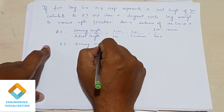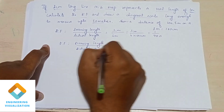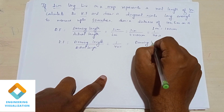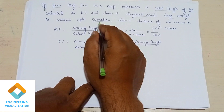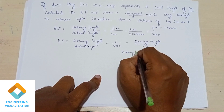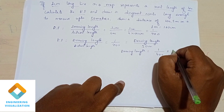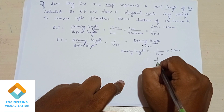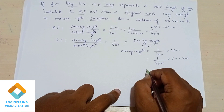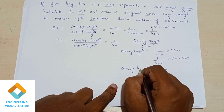Using this representative factor we can find out the drawing length. The actual length given is 50 meters. So drawing length equals 1/400 into 50 meters, which is 1/400 into 50 into 100 centimeters. Simplifying, the drawing length is 12.5 centimeters for the diagonal scale.